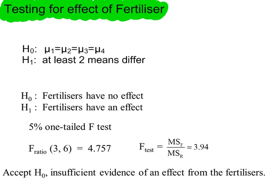When considering fertilizers, we can write H0 and H1 like this, because our fertilizers were numbered 1, 2, 3, 4. Or we can word it like this. Our critical value, so this is the CV, and our test statistic. So 3.94 is less than 4.757. We're going to accept H0. Conclusion in context: accept H0, insufficient evidence of an effect from the fertilizers.